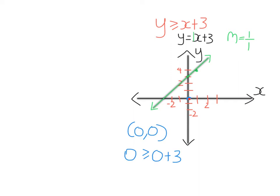That means (0, 0) is on the wrong side of the line. The instruction says: after you test the point, if the point did satisfy the inequality, you shade that side of the line. However, because this point does not satisfy the inequality — substituting it gives a false statement — I'm going to shade the other side of the line, everything above it. Any point in this region will satisfy the inequality.